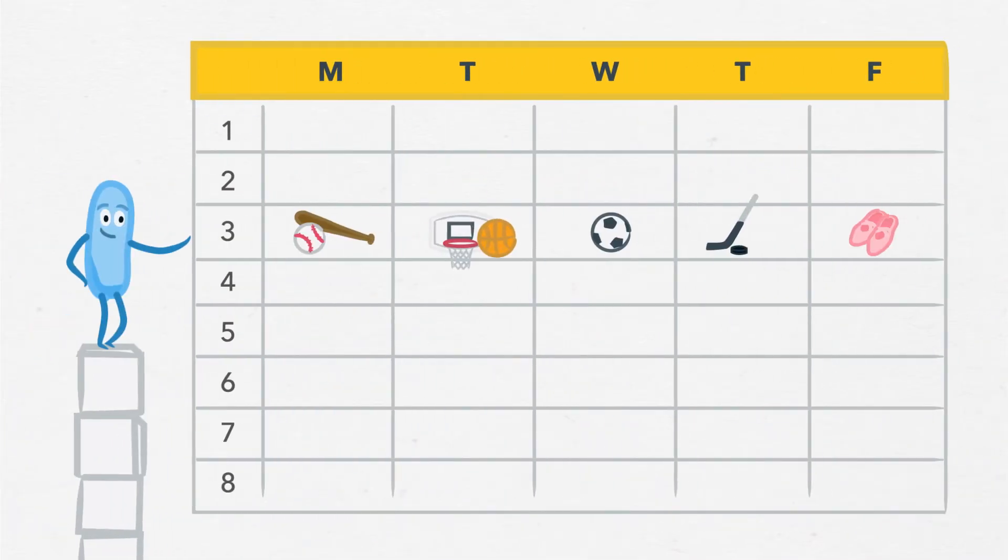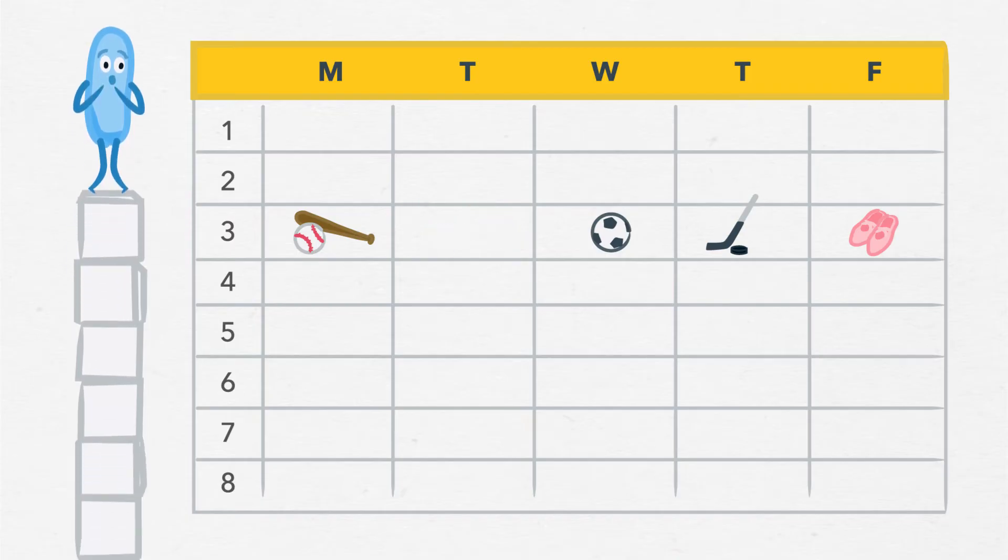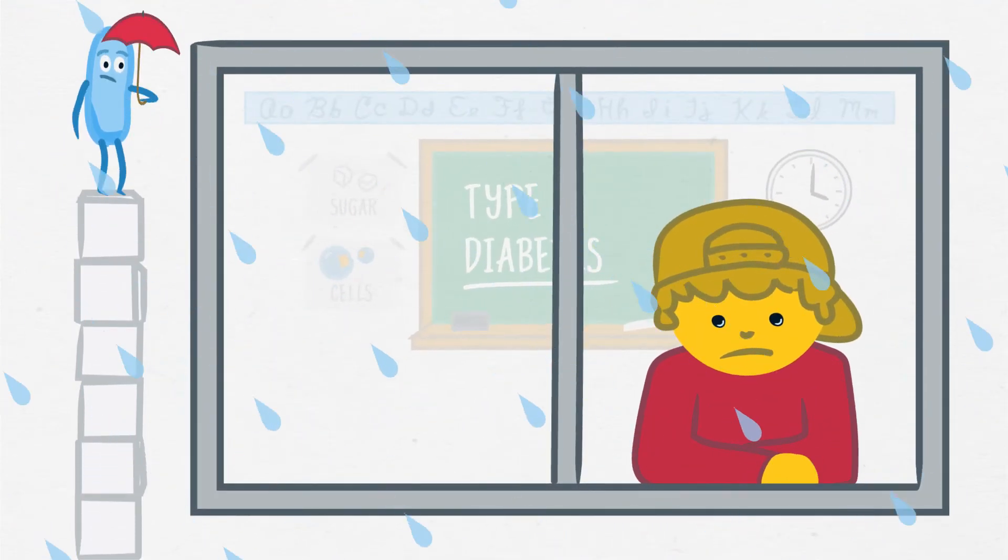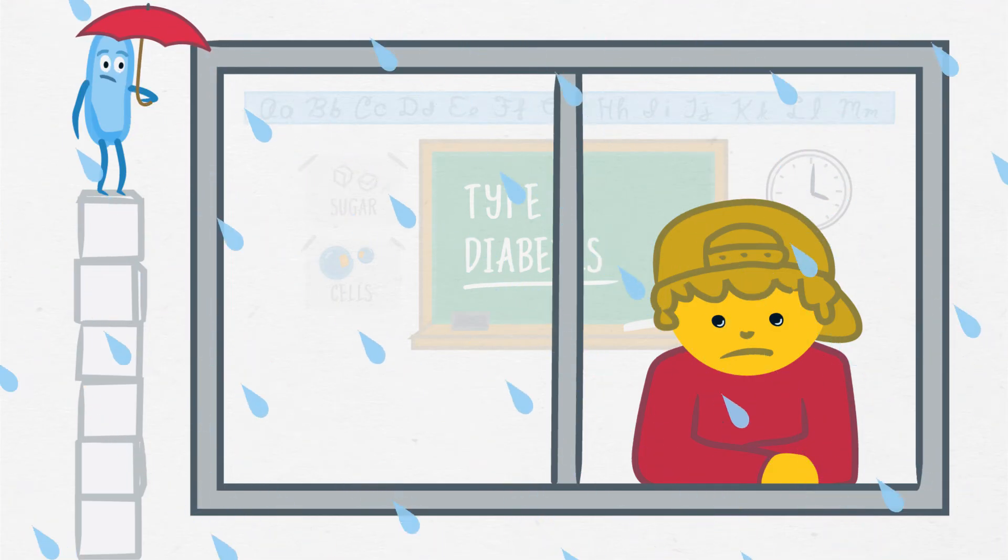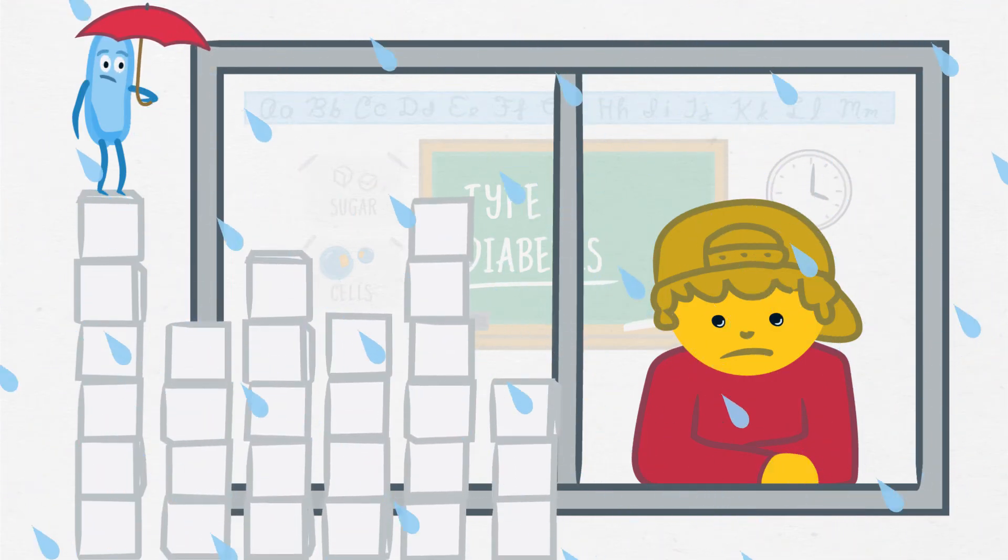A lack of physical activity without proper planning can also lead to high blood sugar. If students have less activity because they're inside on a rainy day, for example, blood sugars may be higher than usual.